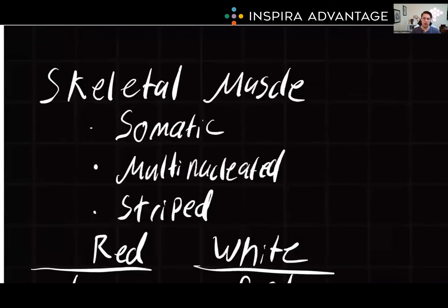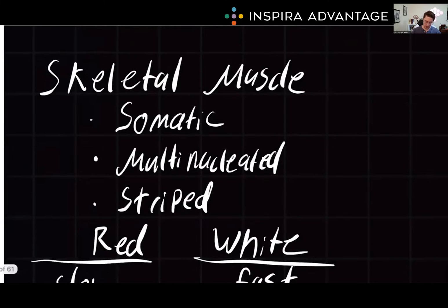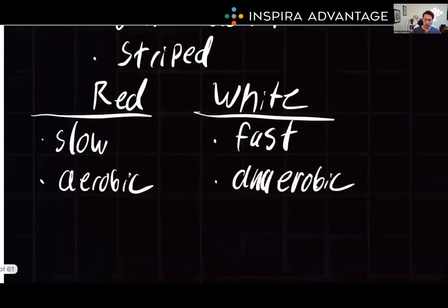Skeletal and striated muscles are under voluntary or somatic control, which allow us to consciously control our movements. These muscles are typically multinucleated, meaning they have multiple nuclei, and appear striped if you look at them under a microscope.